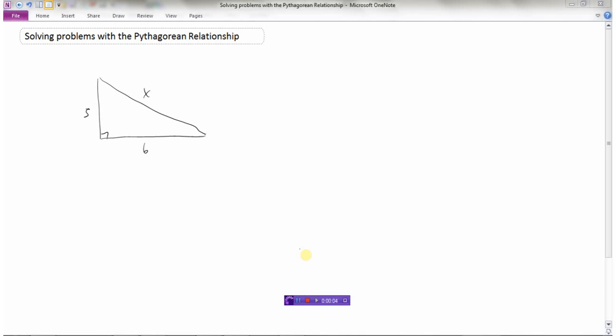Let's look at how we can solve some problems with the Pythagorean relationship. So remember, back to the Pythagorean relationship, and if you forgot, he basically said this. Whenever you have a right triangle, that is a triangle with a 90 degree angle in it.